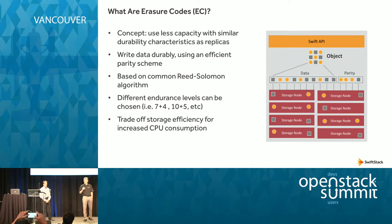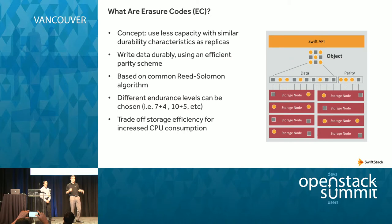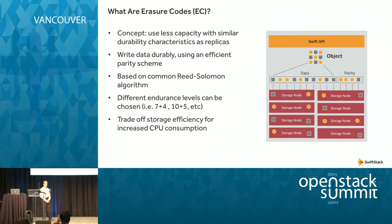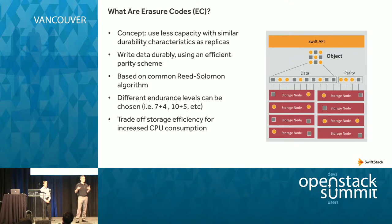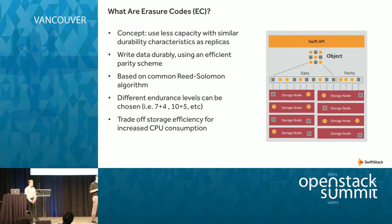So what are erasure codes? The first goal is to be able to store the same amount of data that you have but use less capacity to protect it. Originally, the way Swift was written is that we use replicas to protect our data and maintain a level of data durability. With erasure codes, we want to meet that same level of data durability but use less capacity to do so.